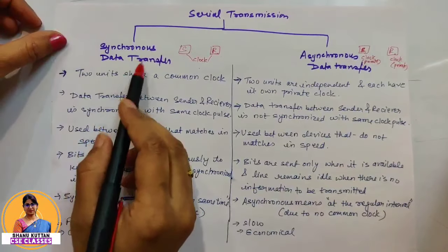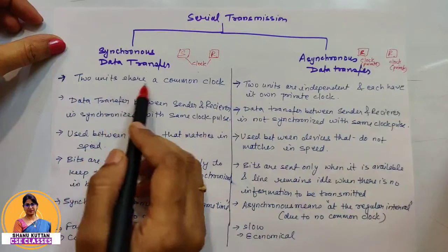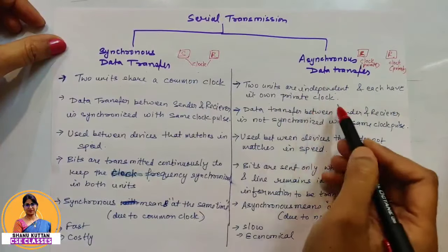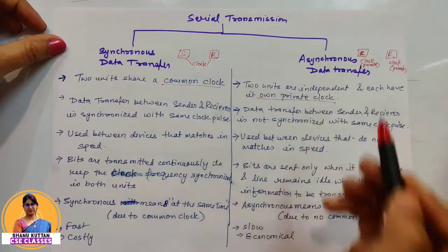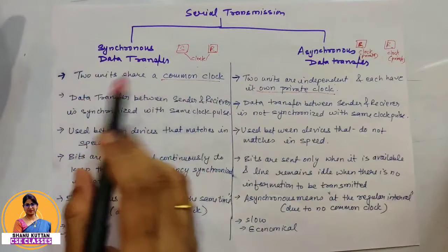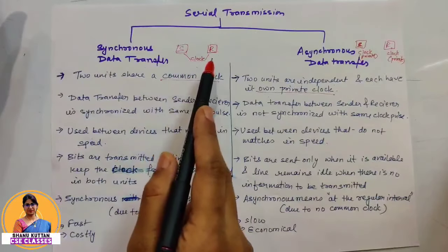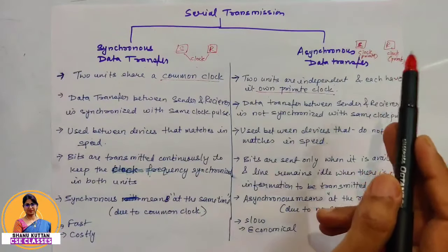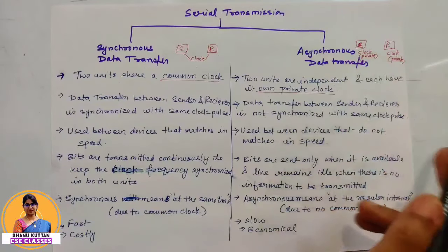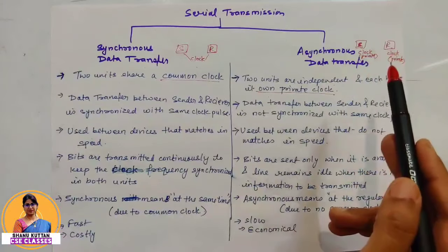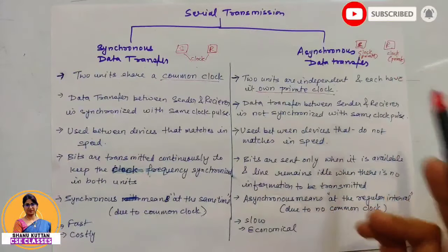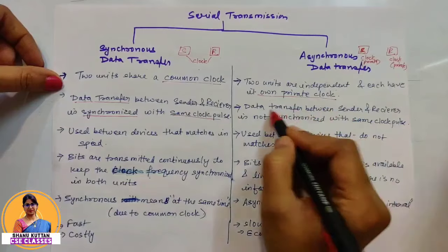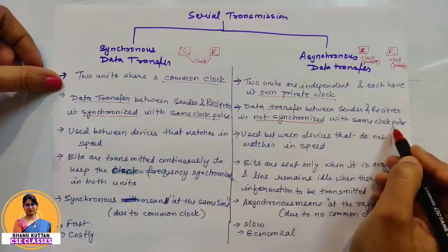In summary: in synchronous data transfer, two units share a common clock; in asynchronous, two units are independent and each has its own private clock. Data transfer between sender and receiver is synchronized with the same clock pulse in synchronous. In asynchronous, the same clock pulse is not shared, so synchronization is achieved through control signals. Synchronous data transfer is used where two devices are matched in speed; asynchronous is used where two devices do not match in speed.